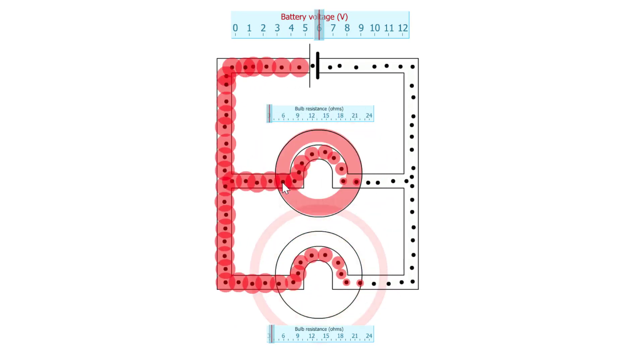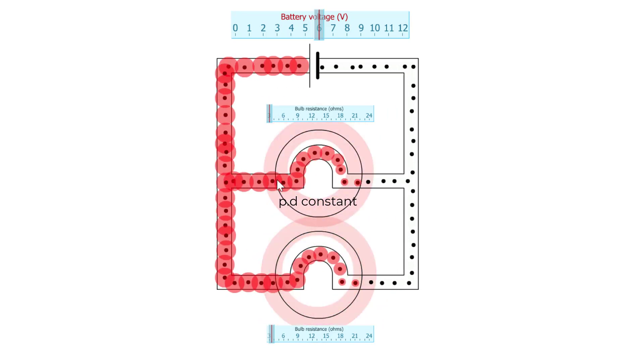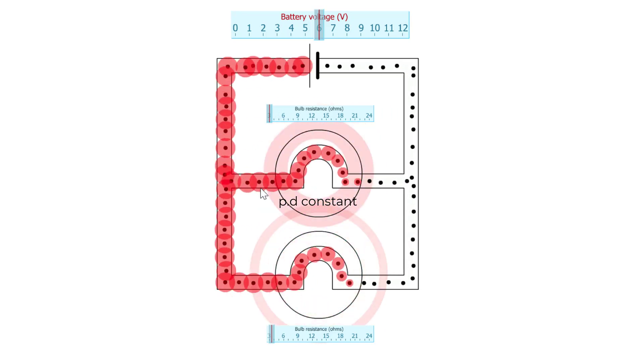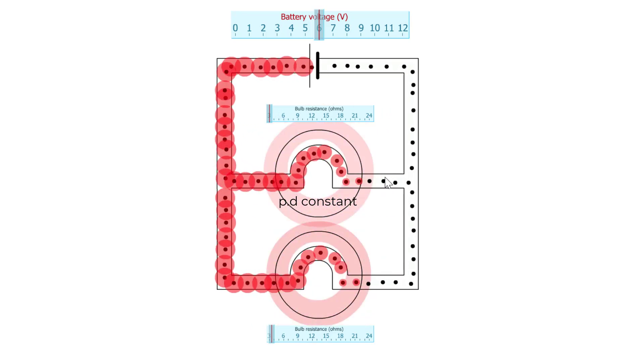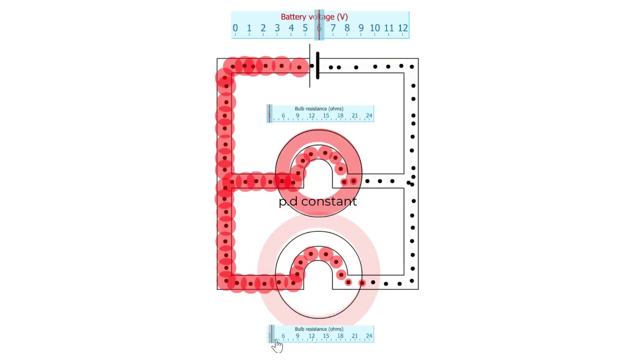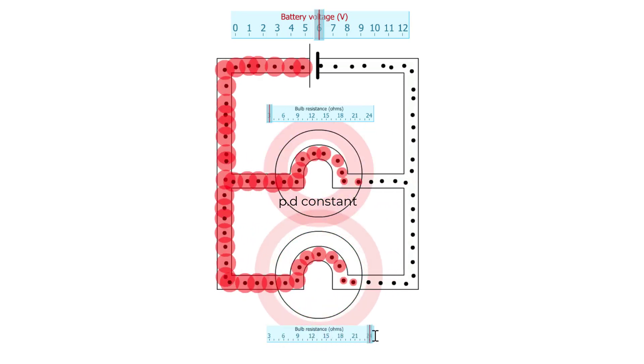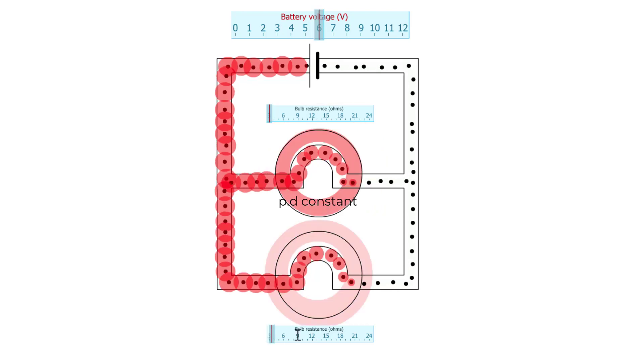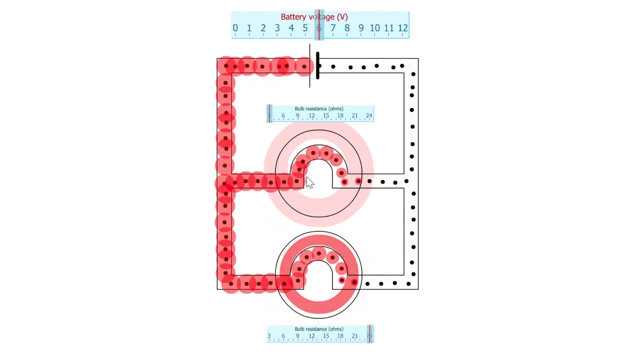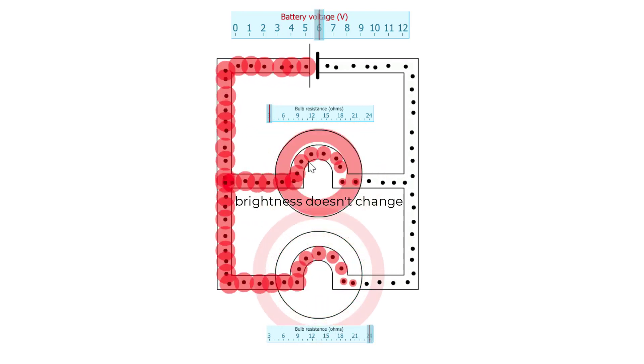So because the PD across this bulb stays constant, lots of energy, zero energy, when I change the other bulb, because this PD stays the same for this bulb, its brightness doesn't change, just stays the same.